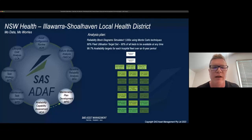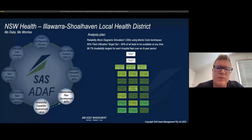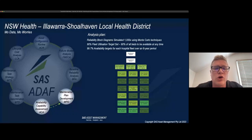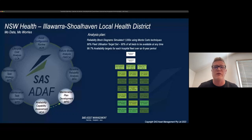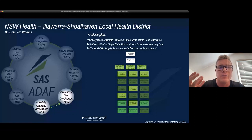Moving into the Maintenance Plan Development and the Availability Capability Assessment — the ACA takes the reliability models developed in the BRA, applies a repairable systems approach, and layers the maintenance plan developed using Reliability Centered Maintenance on top of the reliability model to produce an availability model. The primary difference between the BRA and the ACA is that the ACA incorporates both failures and the maintenance and repair of the system, whereas the BRA only looks at failures.